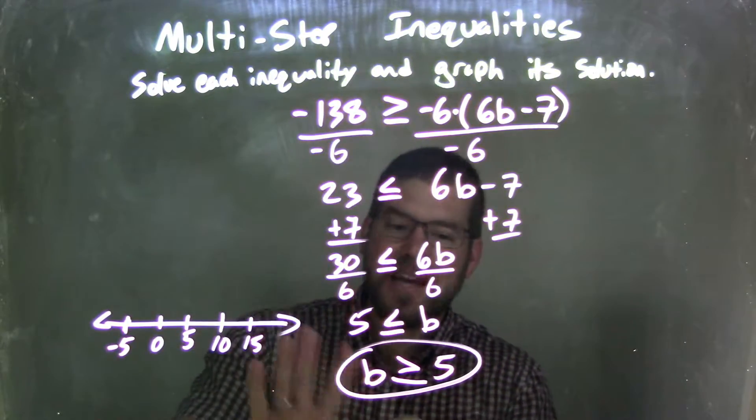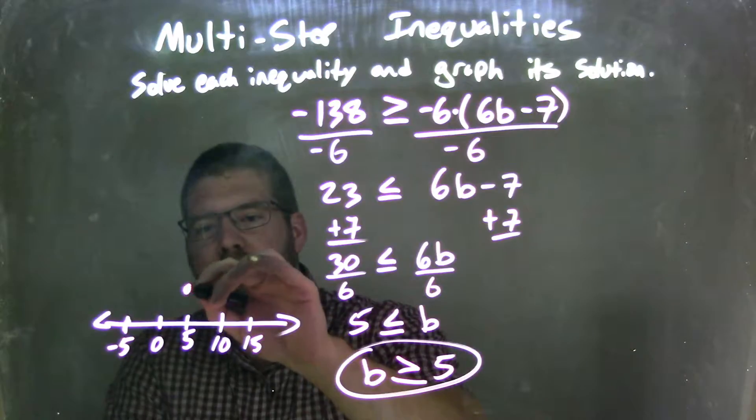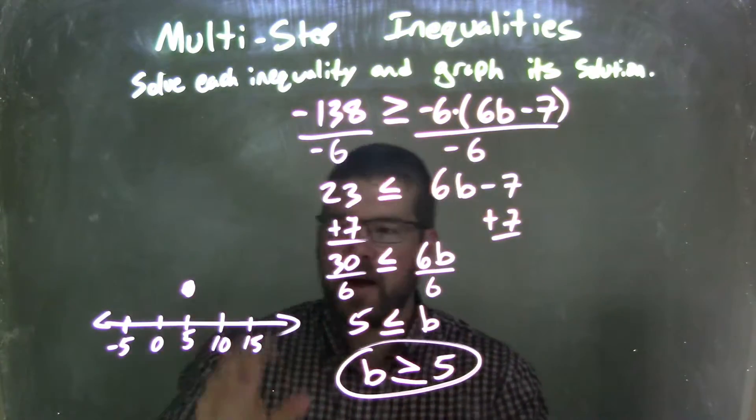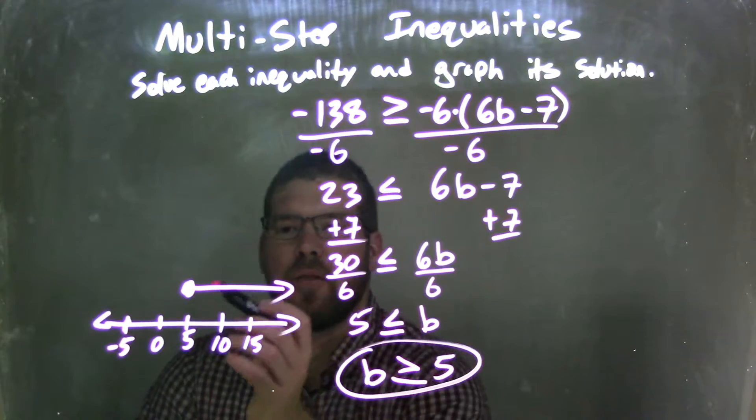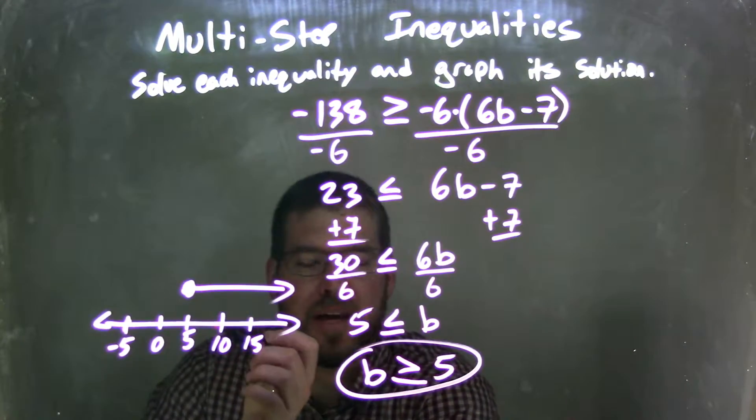Well, if b can equal 5, we're going to have a closed circle at 5. And then if b is greater than also 5, we're going to put our arrow to the right. And there we have it,